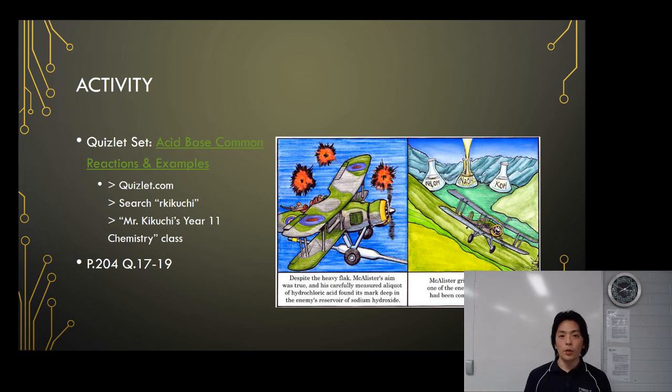Now at this point you can do this activity. You can find this Quizlet by clicking on the link that says acid base common reactions and examples. Alternatively, you can go to Quizlet.com, search for my name R Kikuchi, and find Mr. Kikuchi's Year 11 chemistry. We'll do those questions later on in class.